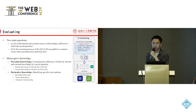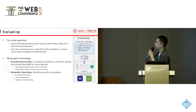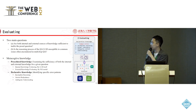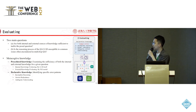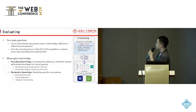In the evaluating phase, we focus on two main questions. First: are both internal and external sources of knowledge sufficient to tackle the proposed question? Second: is the reasoning process of the QA LLM susceptible to common issues encountered in multi-hop QA? We classify metacognitive knowledge into two types. Procedural knowledge examines the sufficiency of both internal and external knowledge — internal knowledge is evaluated by the language model itself, while external knowledge sufficiency is evaluated using an external NLI model. Declarative knowledge identifies specific error patterns such as incomplete reasoning, answer redundancy, and ambiguity.